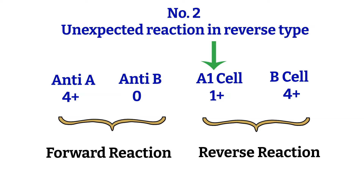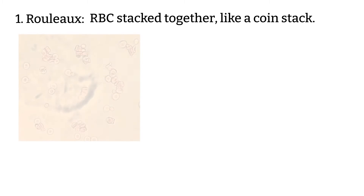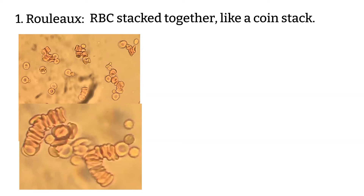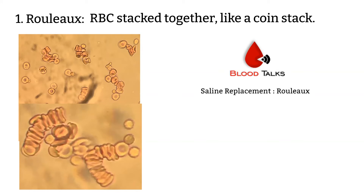What could cause that? Number 1: Rouleaux. Rouleaux should come to your mind right away. This is a condition where the patient's red blood cells stack together and look like a coin stack. It is easily identifiable when you look under the microscope. If you are doing tube typing, take a look at it under the microscope and you will be able to identify it right away. Now that you have identified that Rouleaux is causing the issue, you can do a saline replacement and that should solve your problem. I have a video about saline replacement that tells you step-by-step, so please check it out at the end of this video. If the saline replacement comes out negative, it confirms that you have Rouleaux and your ABO discrepancy is solved.